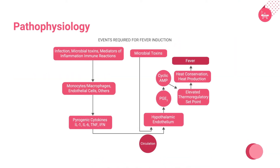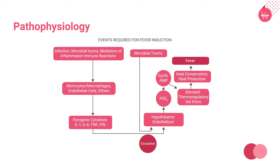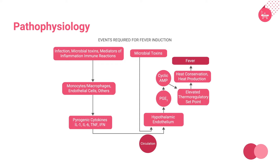The pathophysiology of fever is as follows. Exogenous pyrogens initiate fever by prompting host cells, primarily macrophages, to produce and release endogenous pyrogens. These pyrogens, like interleukin-1, have multiple biological functions crucial for the immune response.